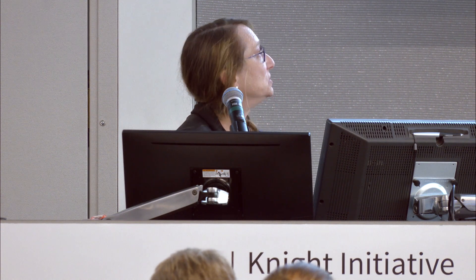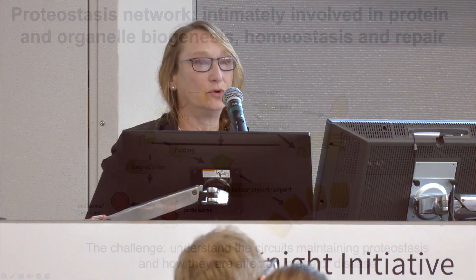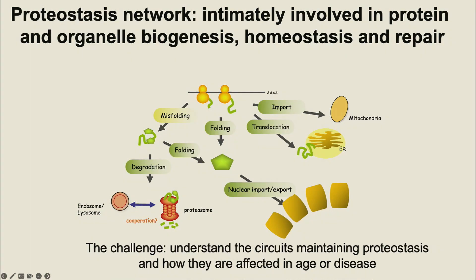It seems that aging increases the risk of protein-based diseases, and there is a lot of evidence from many model systems that aging is associated with a very sharp decline in what is nowadays called proteostasis capacity. Proteostasis is the result of the work of a very elaborate network of enzymes in the cell that together maintains proteins in their correct conformation, and if they are not in the correct conformation, identifies misfolded proteins and targets them for clearance or resuscitation and refunctionalizing.